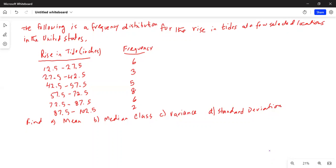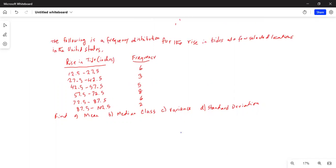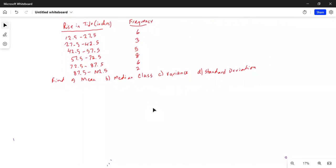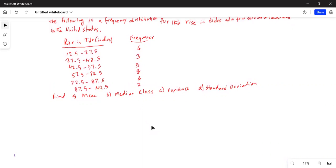The first thing we have to do is calculate the midpoint of each class. I reproduced a table here. The rise in tides are basically the classes or groups of data, and then we will calculate the midpoint, the center of each class, and the frequency.